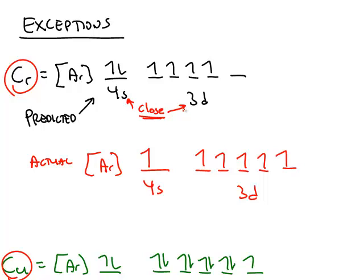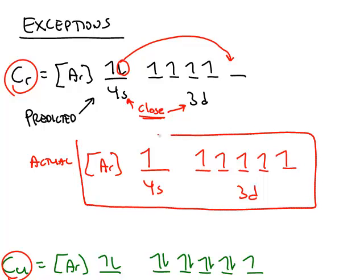You get exceptions when you have subshells of similar energy values. You can think of this as bumping up one electron from the 4S and putting it into the 3D. This is the correct configuration for chromium.